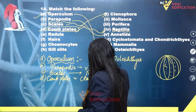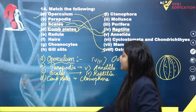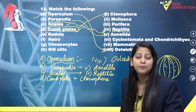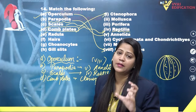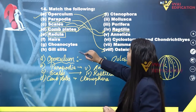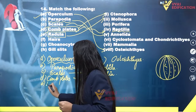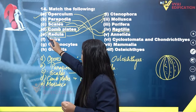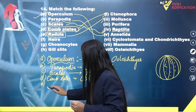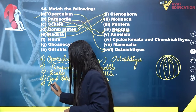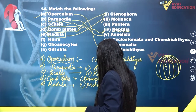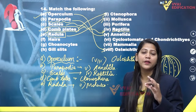Next we have radula. Radula is a rasping organ which helps in food gathering in the members of Mollusca. Molluscans have a radula present in their buccal cavity, and this radula helps in food gathering. So radula will match with Mollusca, as it is the organ found in the buccal cavity of molluscans.